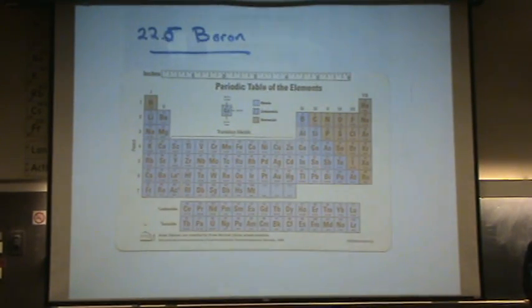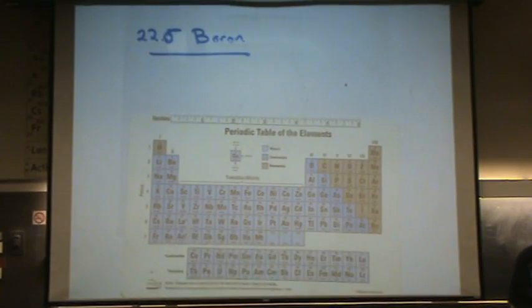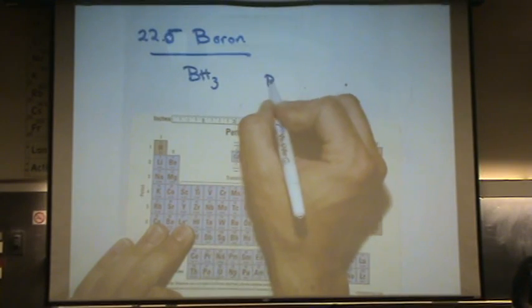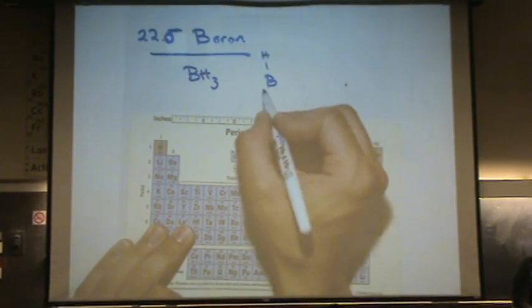Here it's listed as a semi-metal. A common compound of boron is BH3, which will look like this. It's trigonal planar.